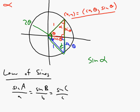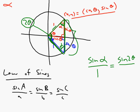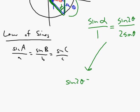I could say that the sine of alpha over the opposite side, which is 1, equals the sine of 2 theta over the opposite side. The opposite side to 2 theta is sine theta plus sine theta, or 2 sine theta. So we have: sine of alpha over 1 equals sine of 2 theta over 2 sine theta. Cross-multiplying gives: the sine of 2 theta equals 2 sine theta times sine alpha.